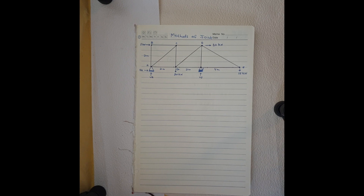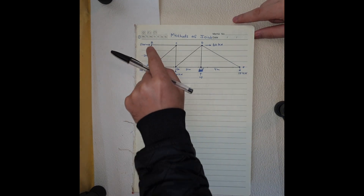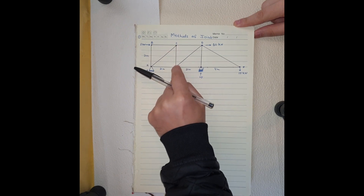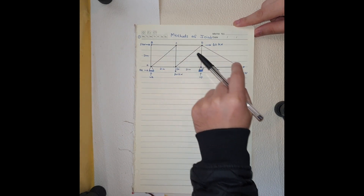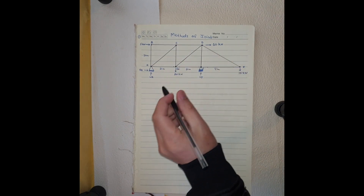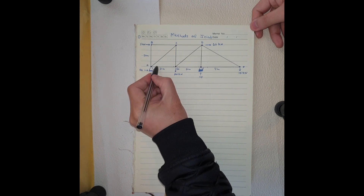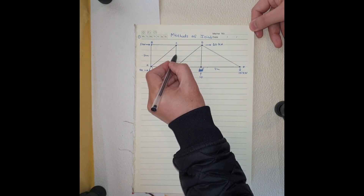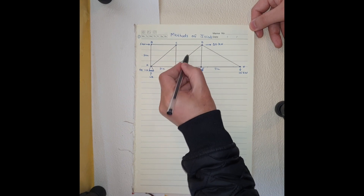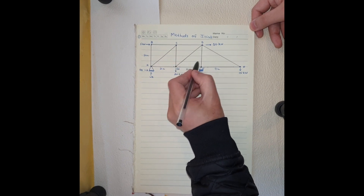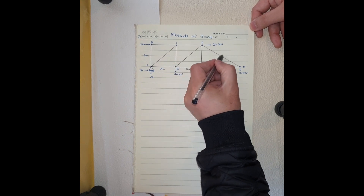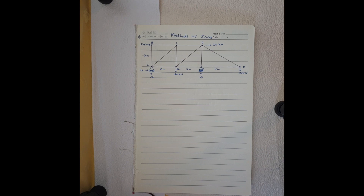In this example we have seven joints — one, two, three, four, five, six, seven — and we have eleven members: one, two, three, four, five, six, seven, eight, nine, ten, eleven.